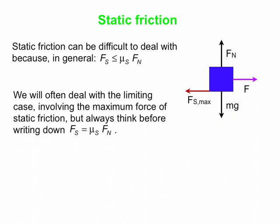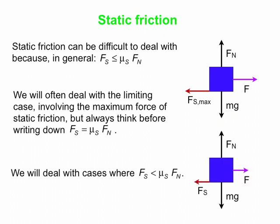We'll often deal with what we call the limiting case, when you're at the maximum possible value. For instance, if the question reads: 'you apply the maximum possible force to the right on a book before the book moves,' then you know you're dealing with the maximum possible force of static friction. But don't just blindly write Fs = mu s × Fn all the time, because if we simply reduce the force we apply to the book, the static friction force goes down and just has to match us — making Fs less than the maximum possible value.